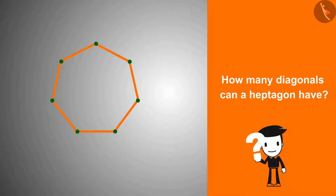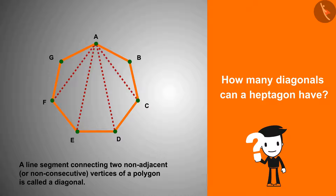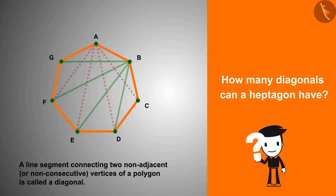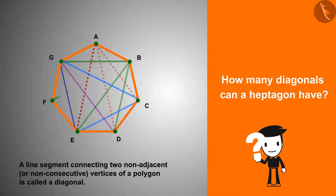Let us first name this heptagon. We know that the line segments connecting any two non-adjacent vertices of a polygon are called diagonals. Starting from vertex A, then drawing diagonals from vertices B, C, D and E. When we try to draw diagonals from vertices F and G, we find that all the diagonals from these vertices are already formed.